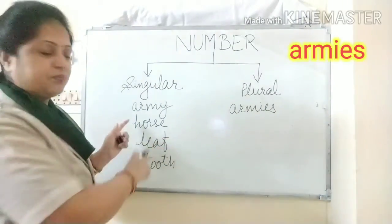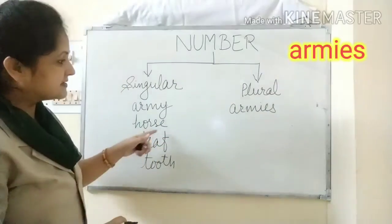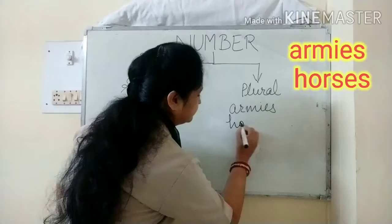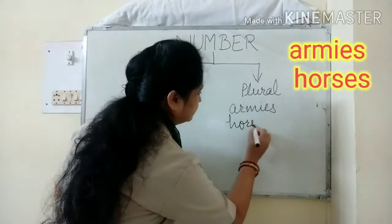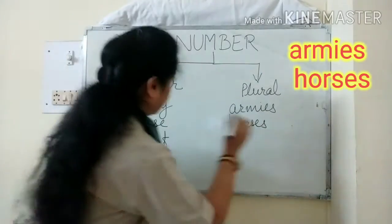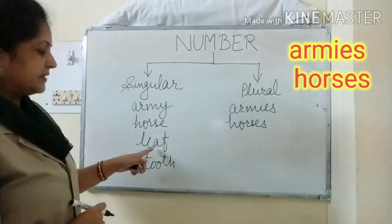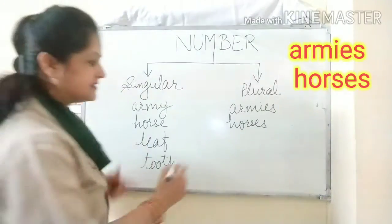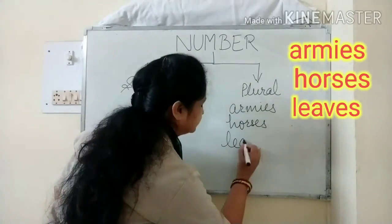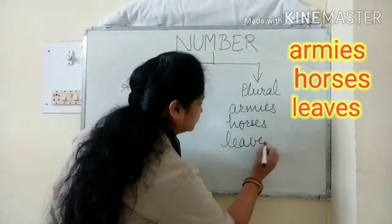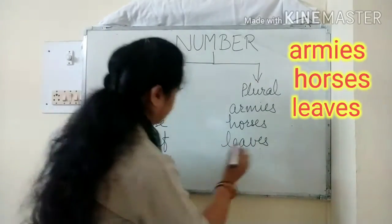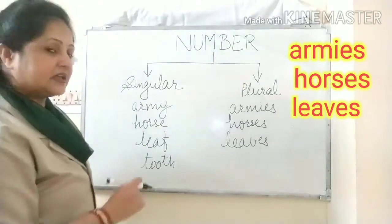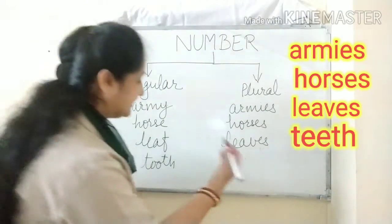The plural of horse is horses. The plural of leaf is leaves. The plural of tooth is teeth.